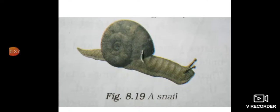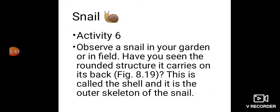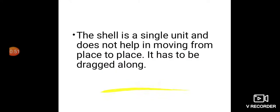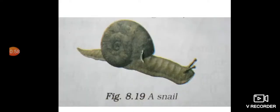Observe a snail in your garden — that is figure 8.19. The shell you see is the outer skeleton of the snail. The shell is not made up of bones. The shell is a single unit and does not help in moving from place to place — it has to be dragged along. Place the snail on a glass plate and watch.